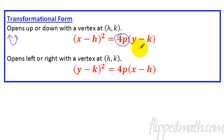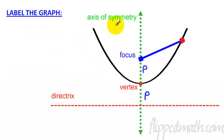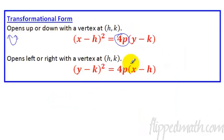Here you have minus h and minus k - so it's the opposite of these two things. And then this is 4p. In other words, the number that is the coefficient right in front of the linear term - not the quadratic term, but the linear term - that represents 4p. So if we divide that number by 4, we get p. And remember what p is? p was the distance between the focus and the vertex.